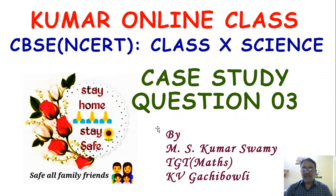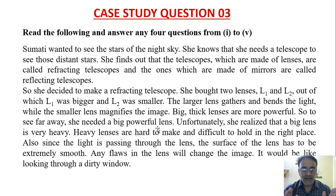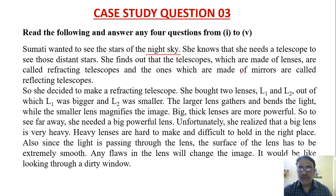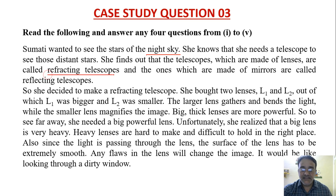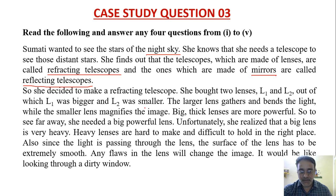We are going to start case study question number three, based on the light chapter. Sumati wanted to see the stars of the night sky and knows she needs a telescope. She found out that telescopes made of lenses are called refracting telescopes and those made of mirrors are called reflecting telescopes, so she decided to make a refracting telescope.